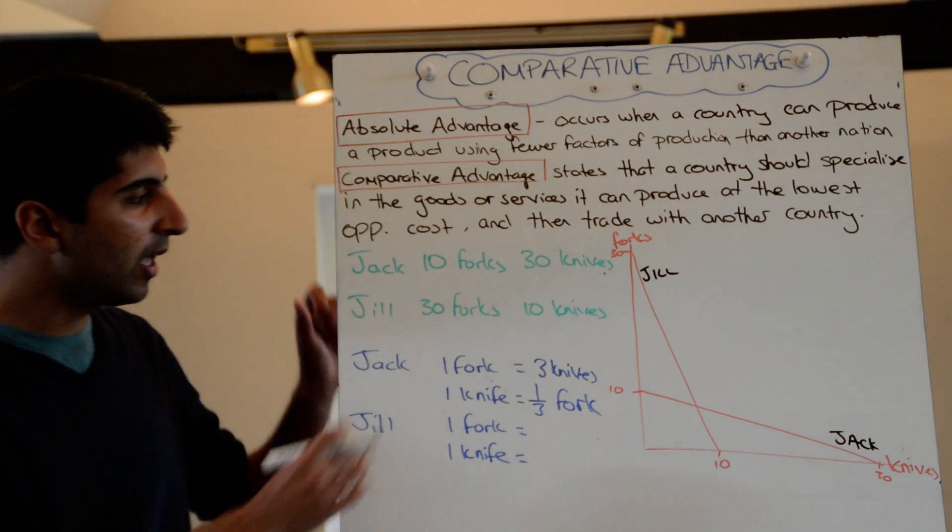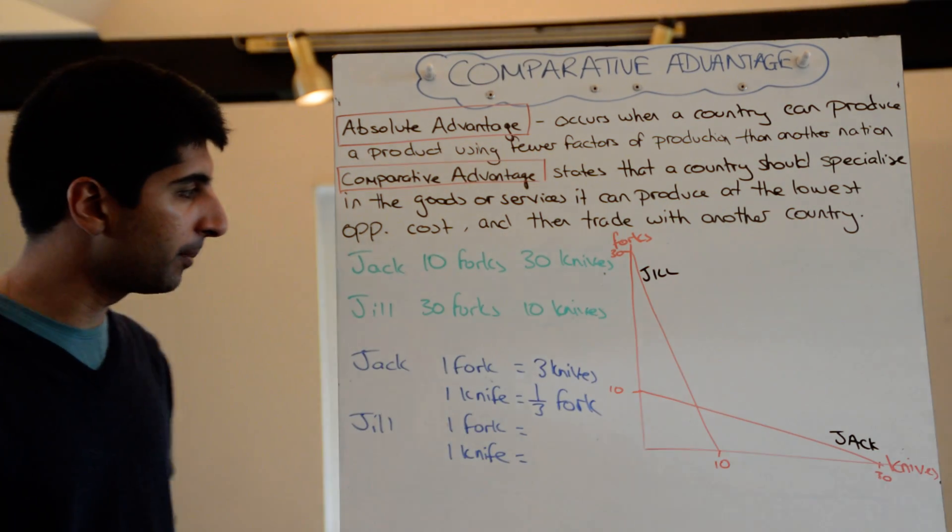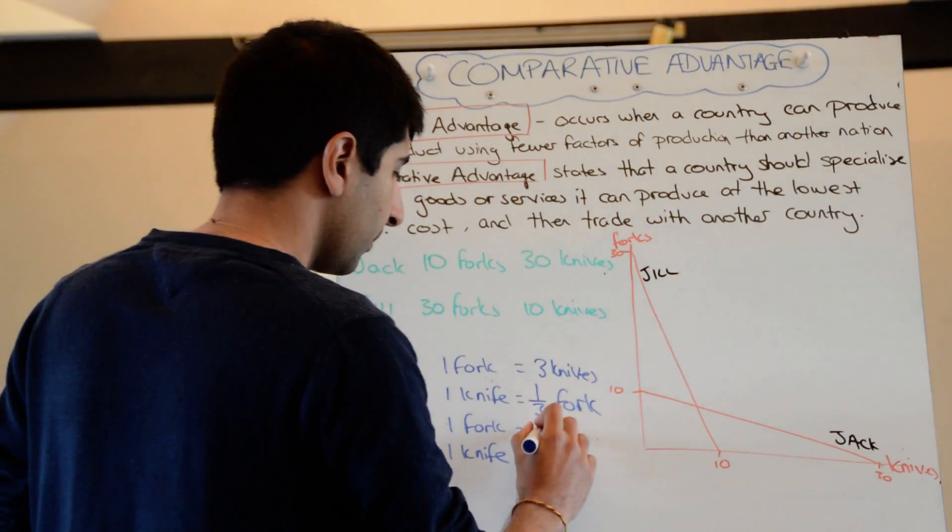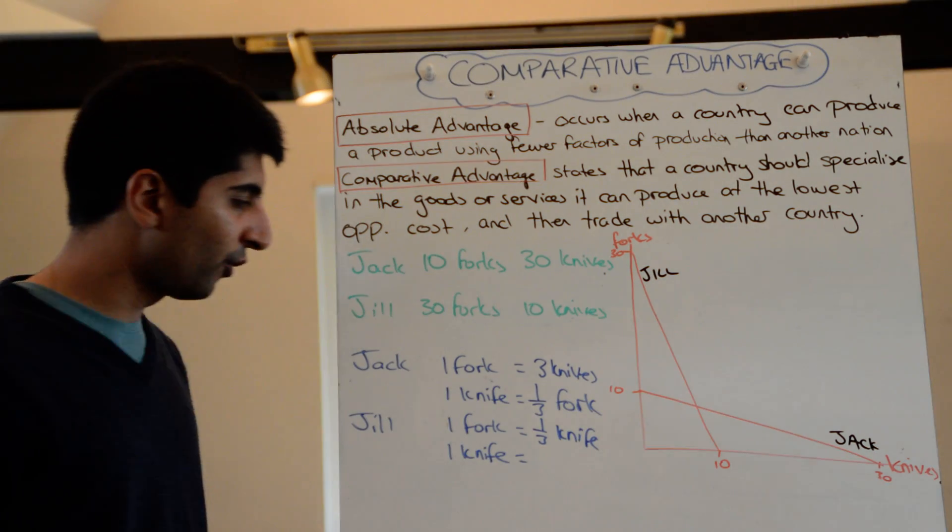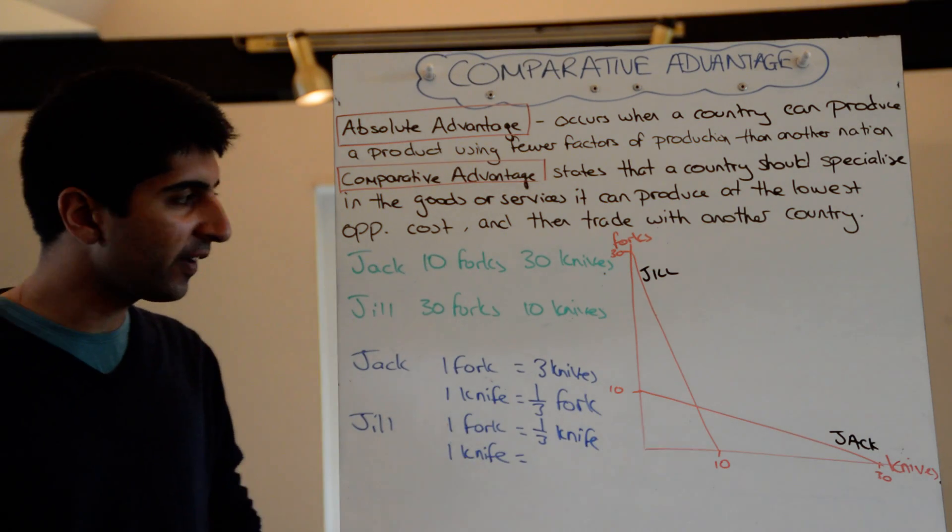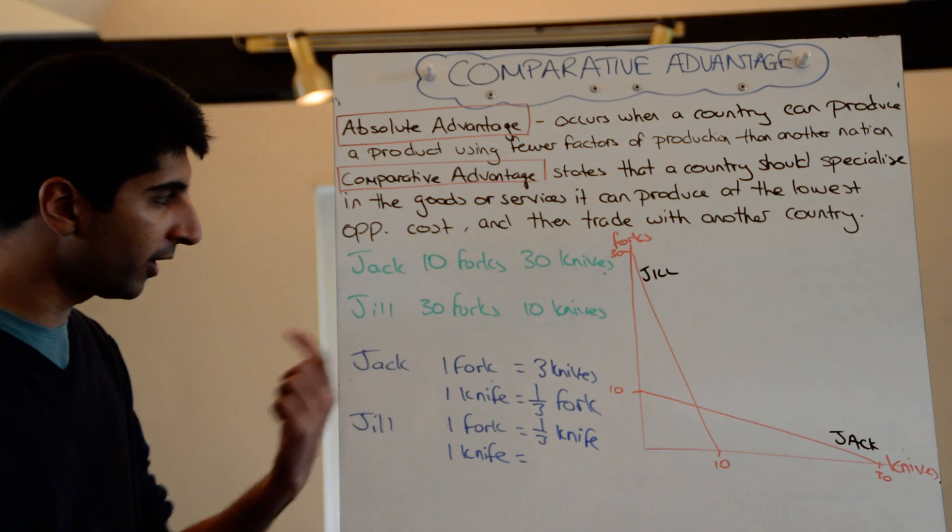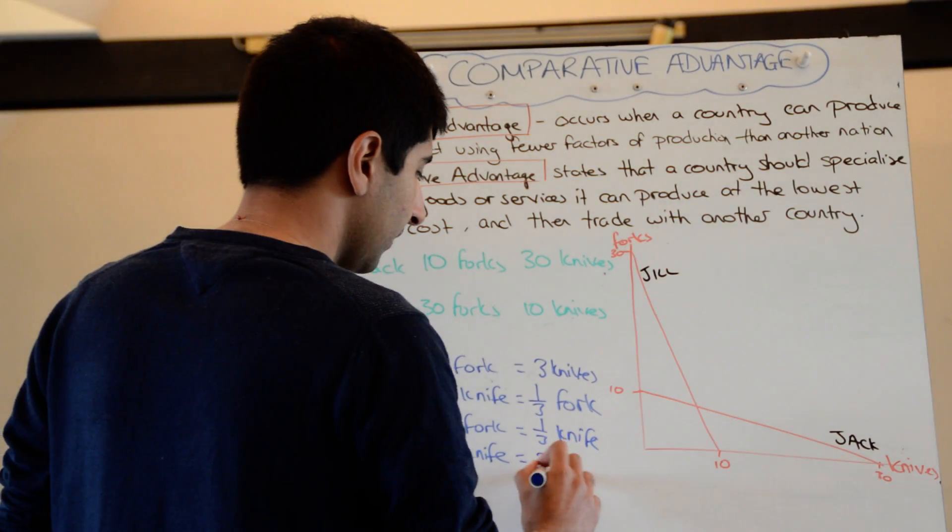For Jill to produce 1 fork, how many knives does she have to give up? Divide both sides by 30, she only has to give up 1 third of a knife. Whereas for Jill to produce one knife, how many forks does she have to give up? Divide both sides by 10, she has to give up three forks.